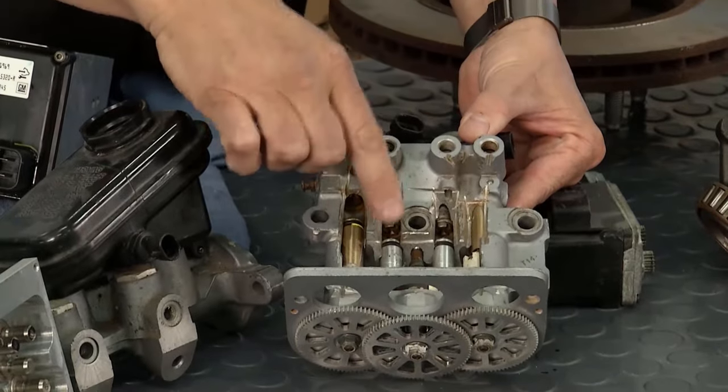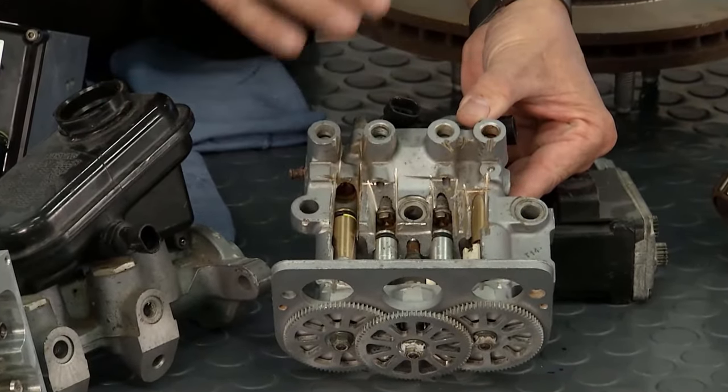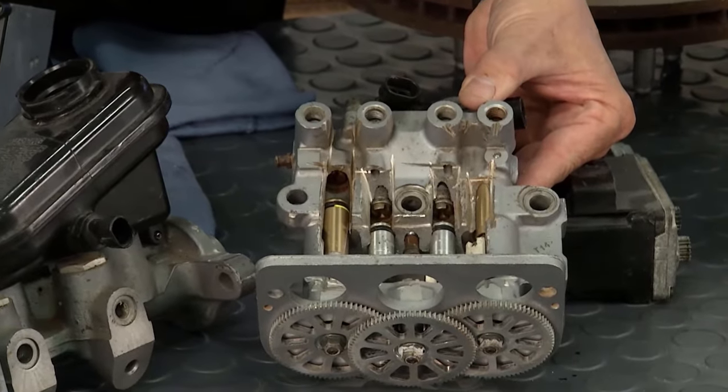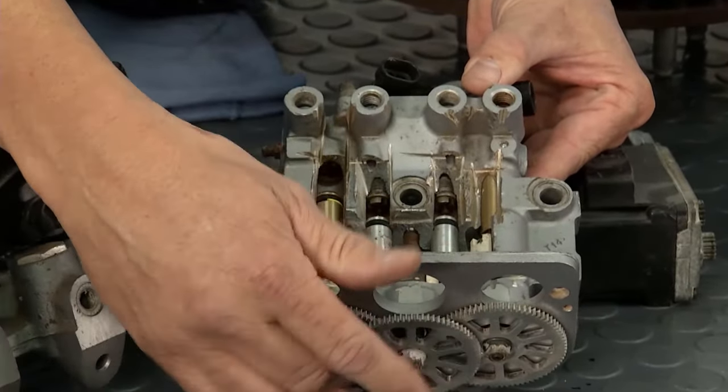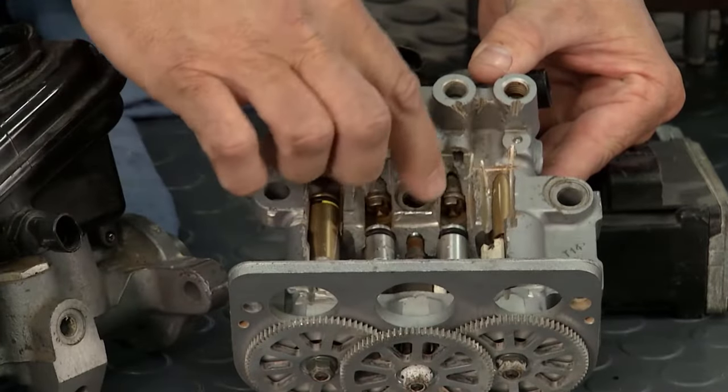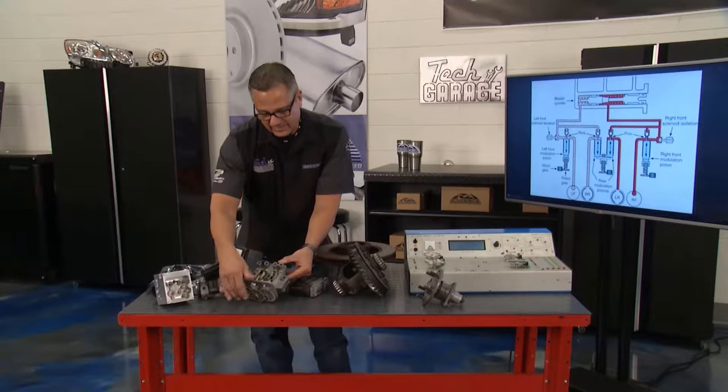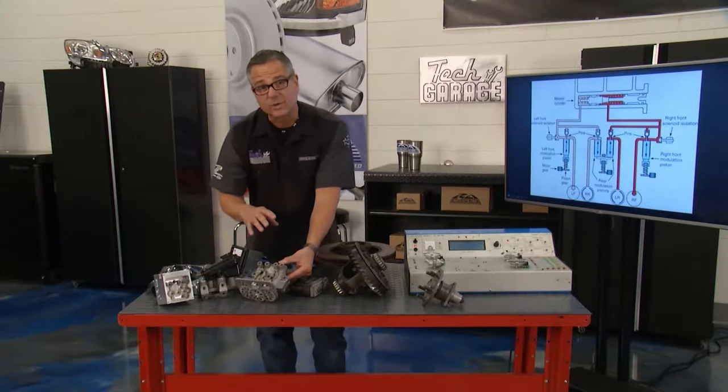Inside an ABS unit, there's some pistons. Through a series of hold, increase, decrease pressure, 15 times per second, I mind you, it's going to run this piston up and down. As it runs that piston up and down, it creates a little void for fluid to go in. It lets that brake get under control, gets it with the other wheels, and everybody's fine. So, as it's running up and down, that's how an ABS unit works.